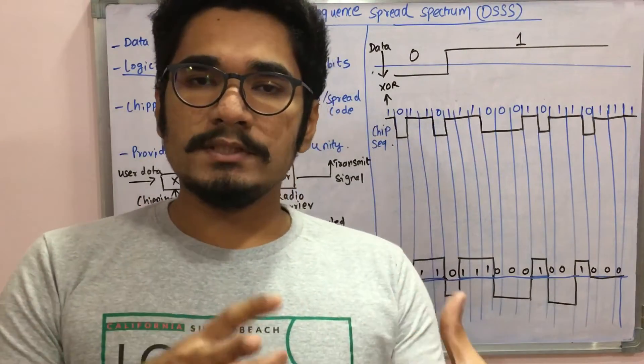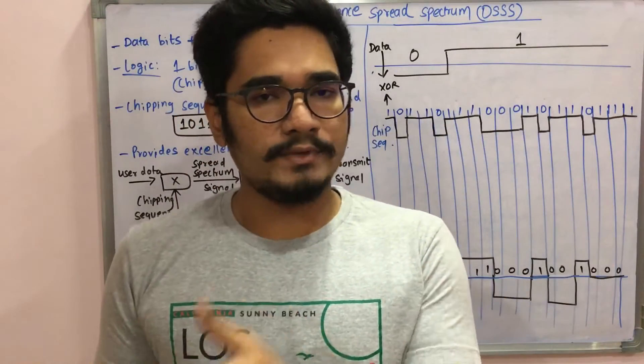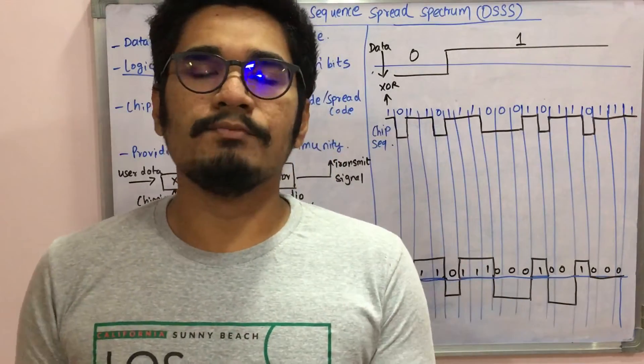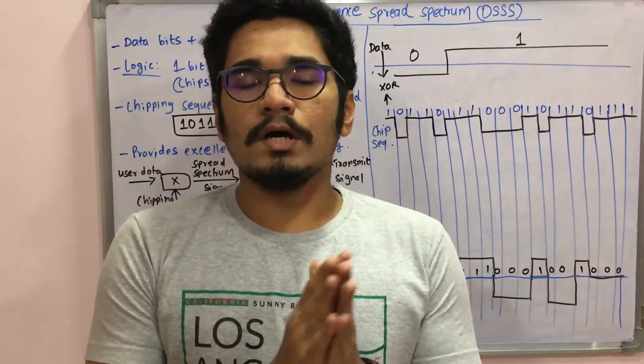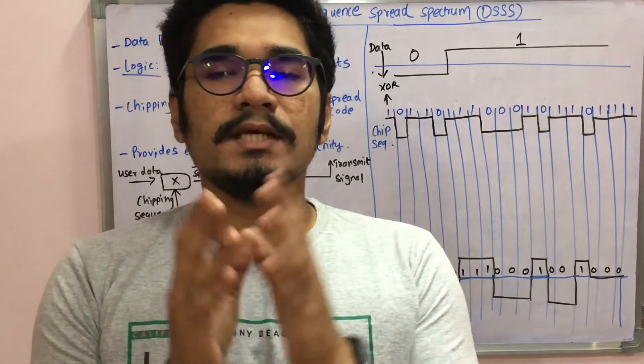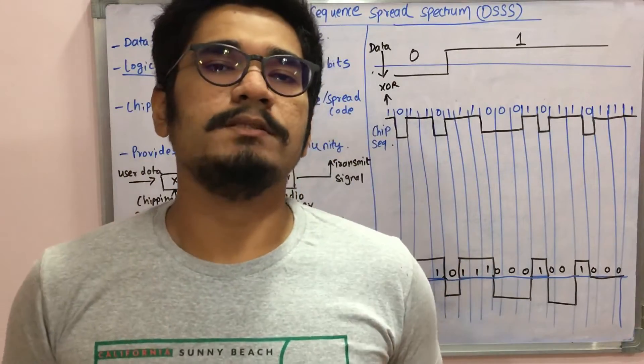Any signal will have data bits like one, zero in binary form or some other form. What this does is it basically has a sequence called a chipping sequence.